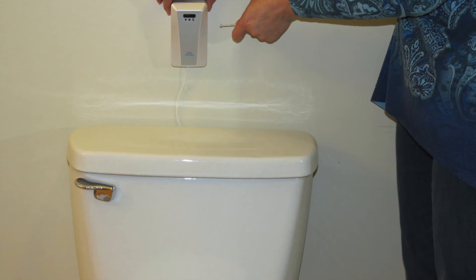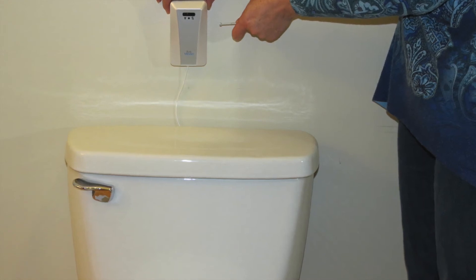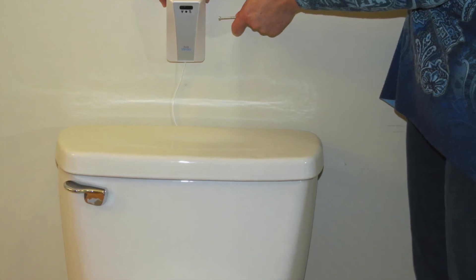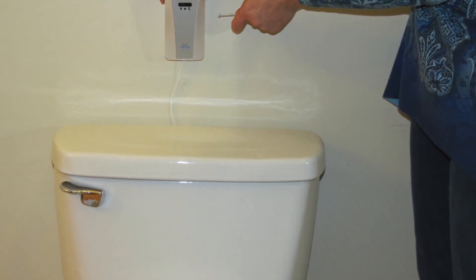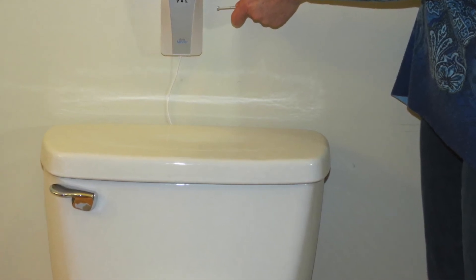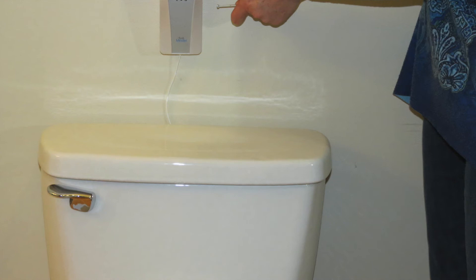Next, we'll be adjusting the half-flush cycle. To adjust the half-flush cycle time, stand to the right of the sensor outside the detection beam and hold the magnetic wand against the magnetic target until the desired water release is achieved.